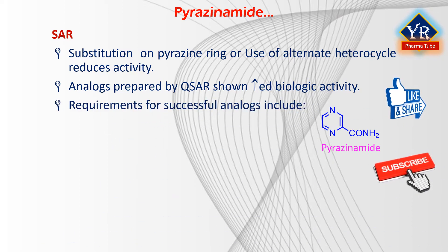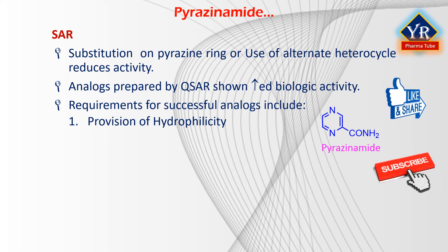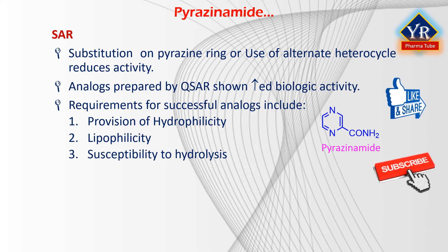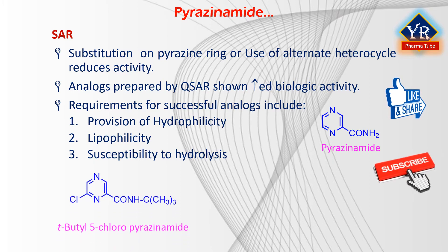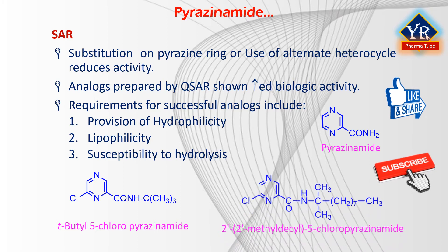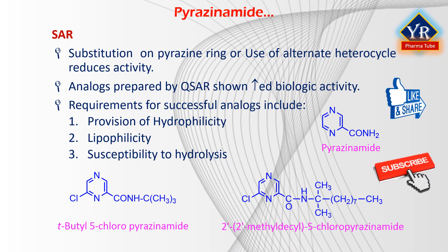The requirements for successful analogues include: 1. Provision for hydrophilicity to allow sufficient plasma concentrations such that the drug can be delivered to the site of infection. 2. Lipophilicity to allow penetration into the mycobacterial cell. 3. Susceptibility to hydrolysis such that the prodrug is unaffected by the extracellular enzymes but is readily hydrolyzed at the site of action. Two compounds have been found that meet these criteria: tertiary butyl-5-chloropyrazinamide and 2,2-methyldacyl-5-chloropyrazinamide.